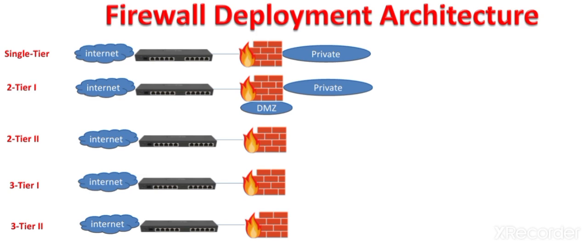In two-tier one architecture, the private network is logically behind the demilitarized zone. This is a single firewall: one interface is connected to the DMZ and the second interface is connected to the private network. The traffic from the internet first comes to the DMZ and then it can go towards the private network depending upon the requirements. There are more strict rules implemented on the interface which is connected to the private network.